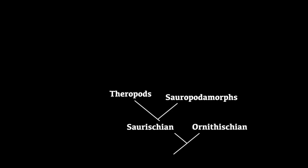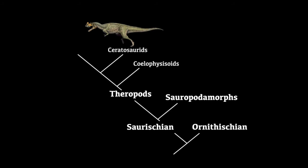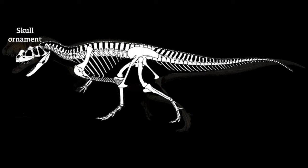The other group of saurischians were the theropods. The first theropod is debatable, but was probably something similar to Herrerasaurus — whether herrerasaurids were theropods or a third branch alongside the sauropodomorphs remains unclear. The first definite group of theropods were the coelophysoids, with more open hips, interlocking vertebrae, and flexible articulated jaws. Examples include Coelophysis, Procompsognathus, and Dilophosaurus. The next group were the ceratosaurids, whose main features are skull ornaments like horns and a large head relative to the body. Examples include Ceratosaurus and Genyodectes.